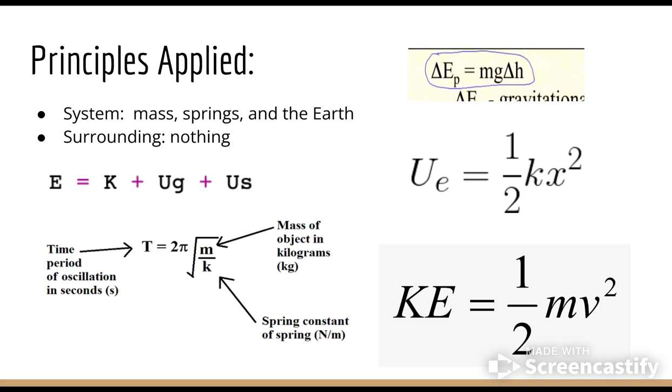We must also consider what our system is. In this case, we will say that the system is the mass, the spring, and earth, so all of our interactions occur within the system. Thereby, there will be no work involved since there are no surroundings. Then the total change in energy should be zero.